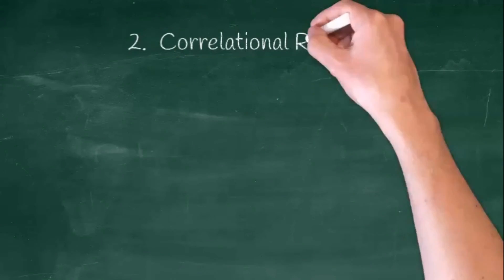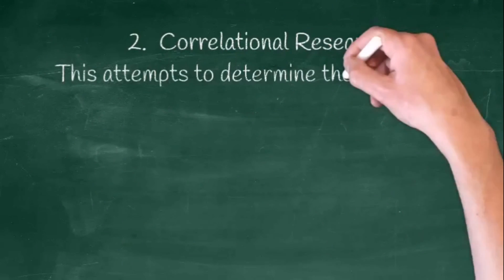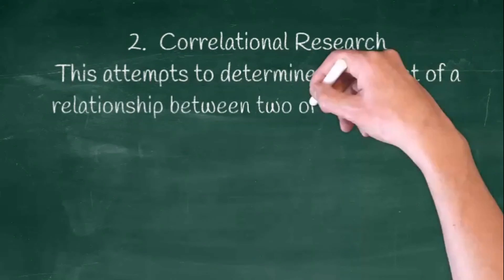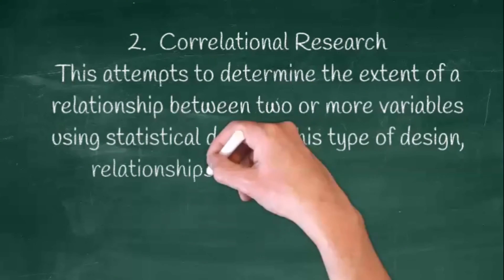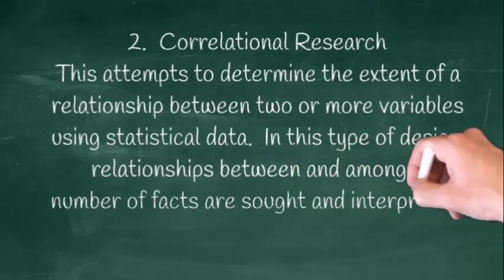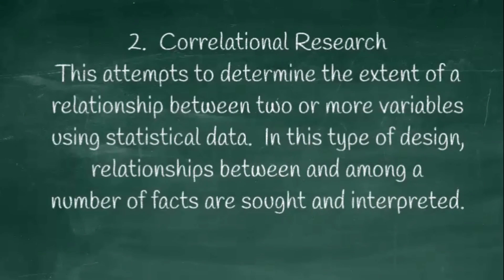The second type of quantitative research design is correlational research. This attempts to determine the extent of a relationship between two or more variables using statistical data. In this type of design, relationships between and among a number of facts are sought and interpreted.